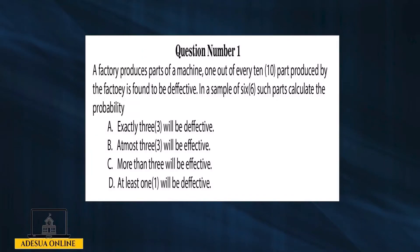A factory produces parts of a machine. One out of every ten parts produced by the factory is found to be defective. In a sample of six such parts, calculate the probability that: A, exactly three will be defective.